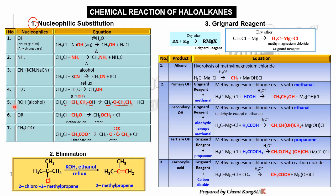The next nucleophile is OR⁻, referred to as the alkoxide ion. When it undergoes nucleophilic substitution, an ether is formed. The sixth type involves carboxylic acid — specifically the ethanoate ion (two carbons). The ethanoate ion reacting with haloalkane forms an ester. Check for the C-O-CO-C linkage.